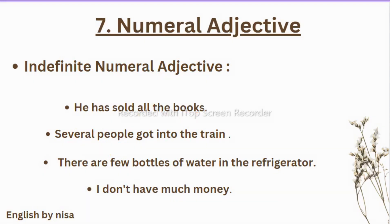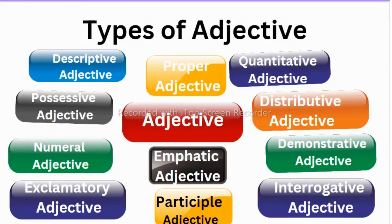So students, this is all about the types of adjectives. Today we have learned seven types. I hope it would be helpful for you. In the next video we'll see the further types of adjectives — emphatic adjective, participial adjectives, and interrogative and exclamatory adjectives. Stay tuned for the next videos, and thanks for watching.